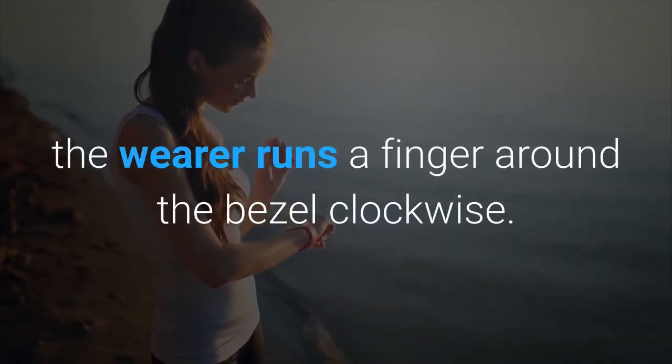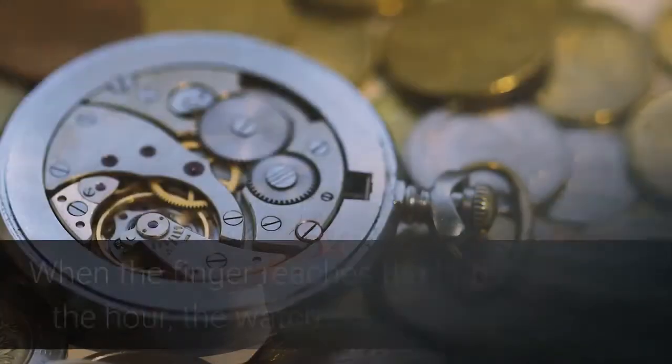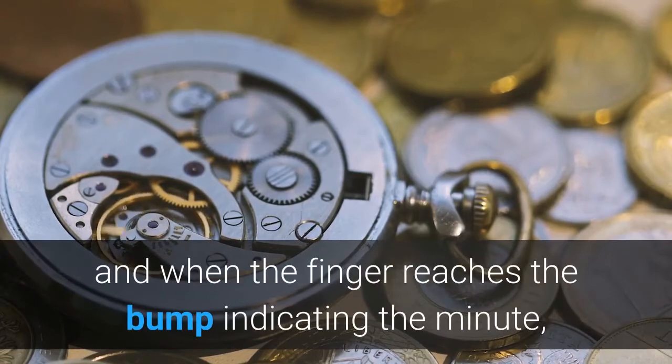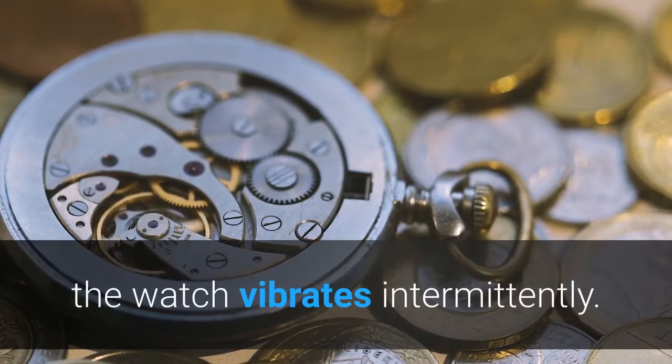When the finger reaches the bump indicating the hour, the watch vibrates continuously, and when the finger reaches the bump indicating the minute, the watch vibrates intermittently.